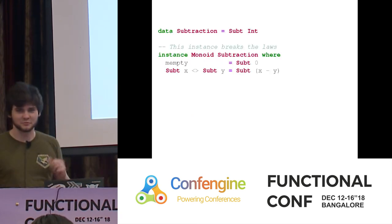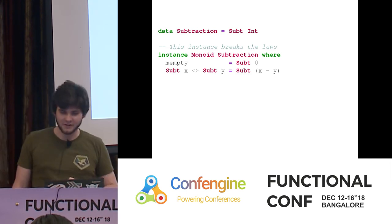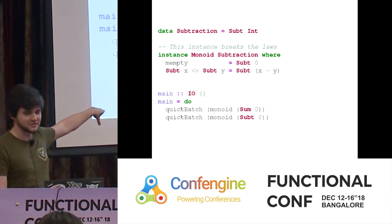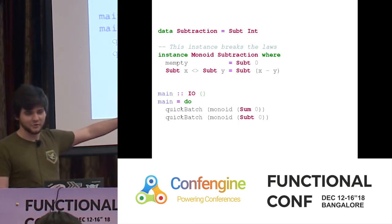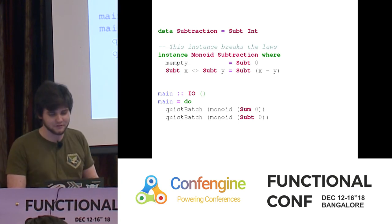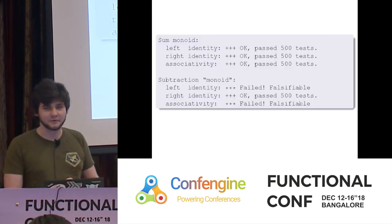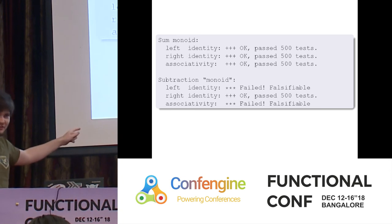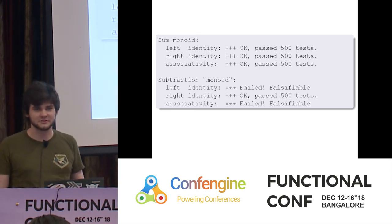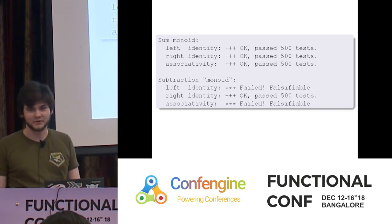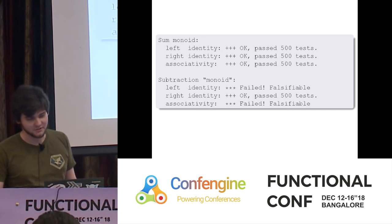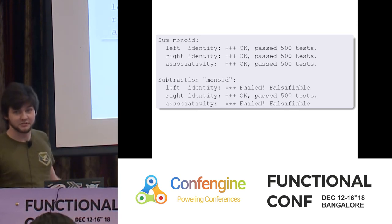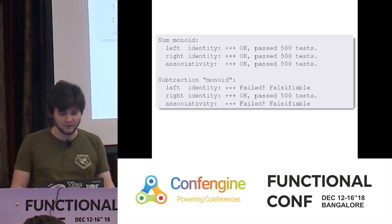For example, we can run the Monoid test for addition and for subtraction. For addition, after 1,500 automatically generated cases, it could not break the laws — giving reasonable confidence. For subtraction, it was quite quickly able to tell that left identity and associativity don't work. It would be better to write a formal proof that laws hold, but testing is lightweight and works well.